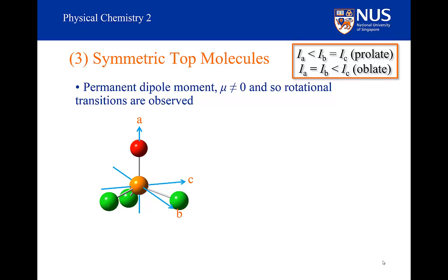We'll start off with prolate symmetric tops, where the moment of inertia around one of the axes is smaller than the moment of inertia around the other two axes. For phosphorous oxychloride, the A axis is aligned along the P-O bond. The moment of inertia is smallest around this axis — you have to calculate the moments of inertia to determine that. The moments of inertia which are perpendicular to this axis will be the same.